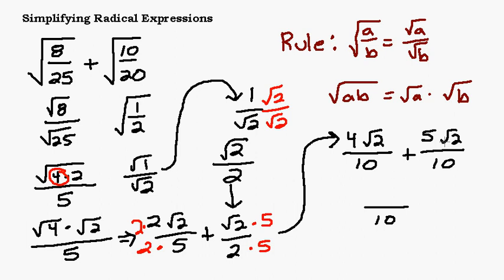Since these √2's are the same, that gives me 9√2. I can combine them like like terms. And that will be my answer: 9√2 over 10. Now I know I'm done.